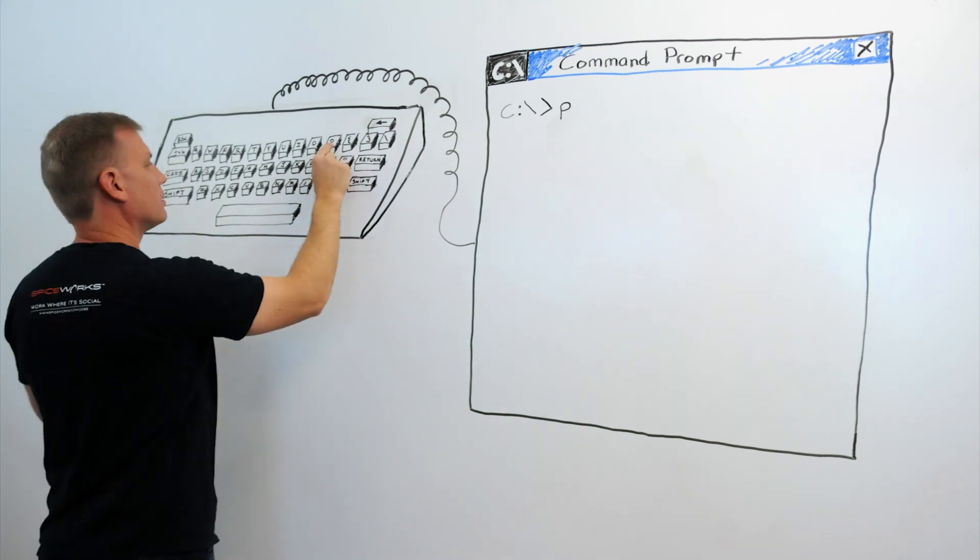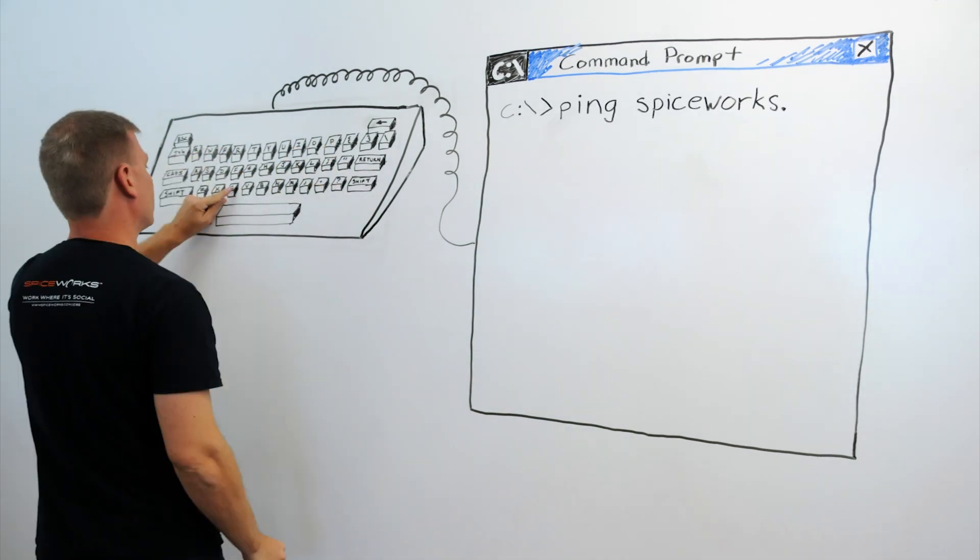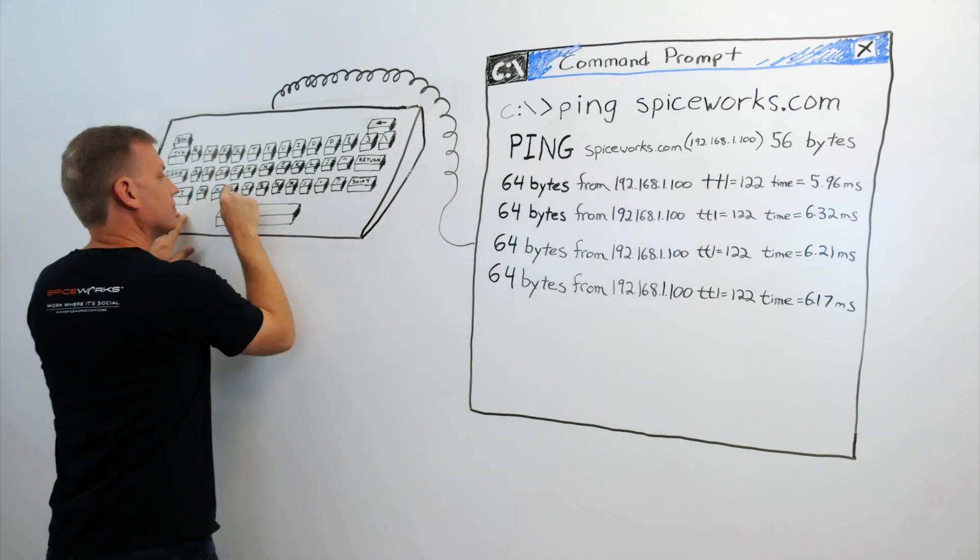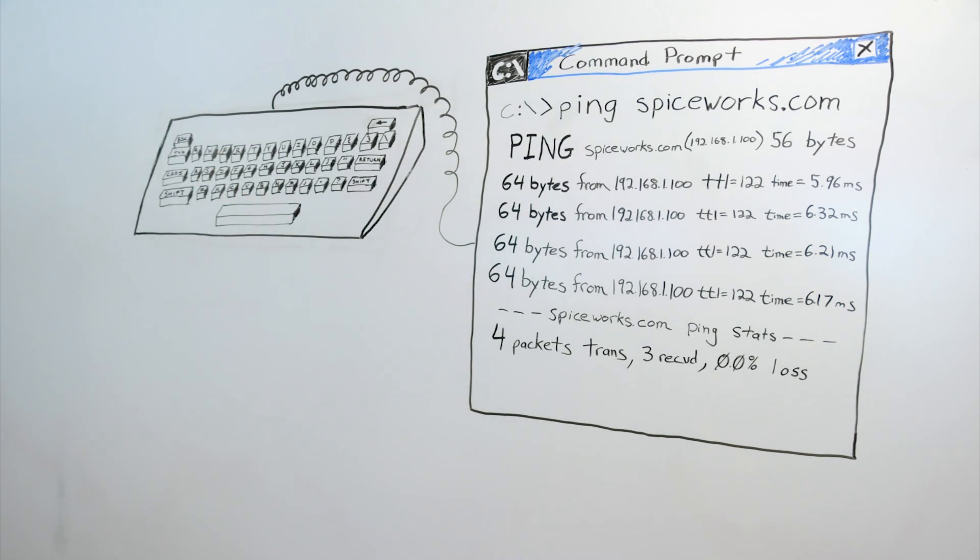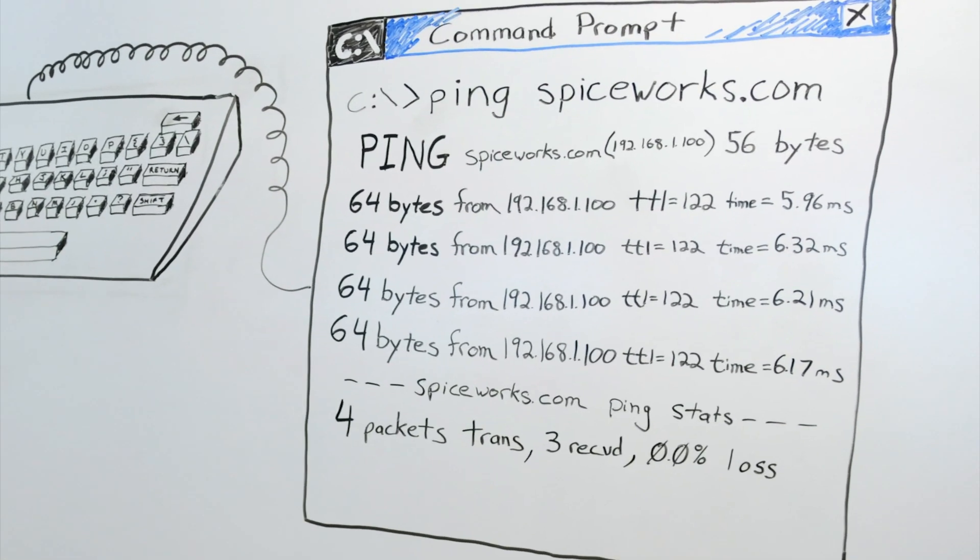By simply typing ping and any IP or web address of a device you can determine whether or not the device is up, online, and responding. You'll get results on how many packets of information were sent back from the address that is usually shown as an IP address, and it'll also tell you how long it took. When the operation is completed you'll also be able to see whether any data was lost and some stats on all of the transmissions.